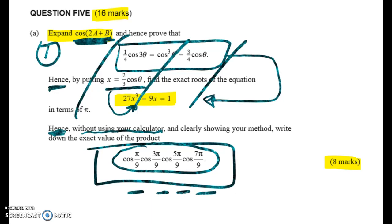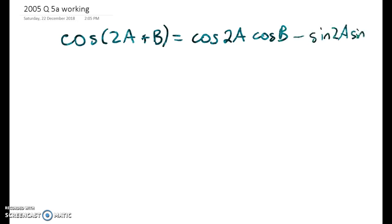Okay, so now let's get into the first bit, which is to do the expansion of cos(2a + b). So cos of (2a + b) we can expand using the compound angle formula. So it's going to be cos 2a cos b minus sin 2a sin b. And that's one that you will get on the formula sheet, but you should know it.